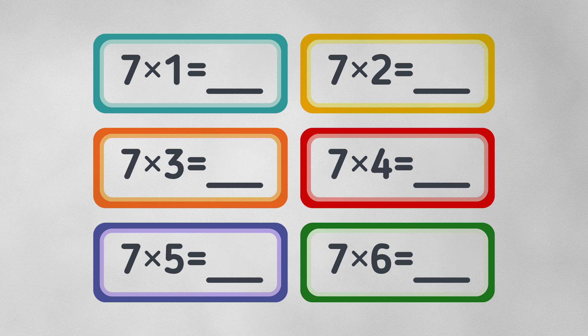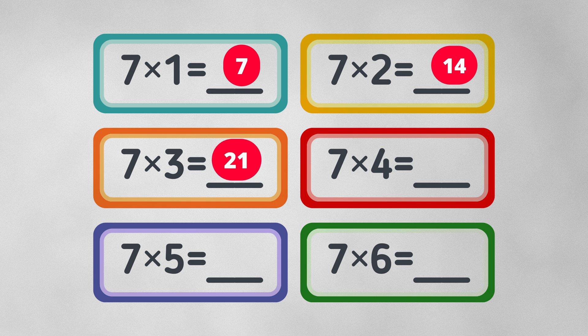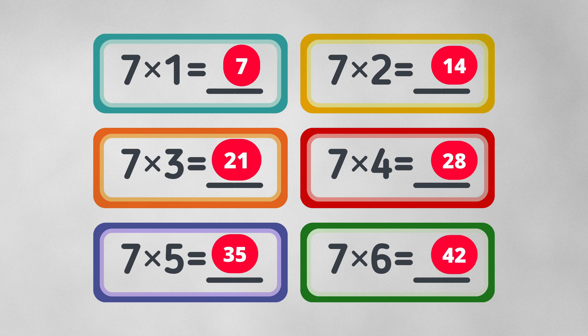Seven times one equals seven. Seven times two equals fourteen. Seven times three equals twenty-one. Seven times four equals twenty-eight. Seven times five equals thirty-five. Seven times six equals forty-two.